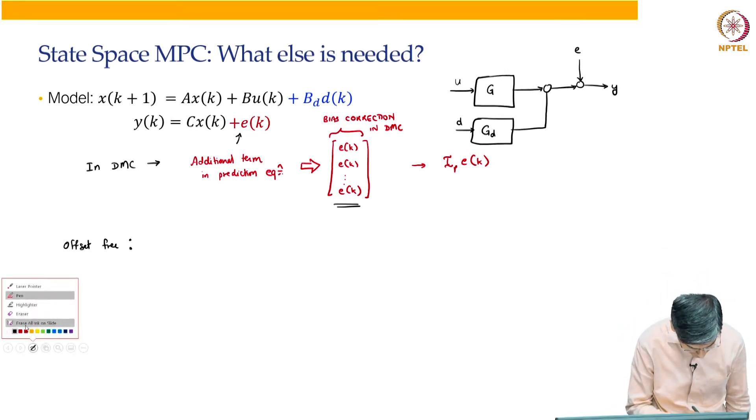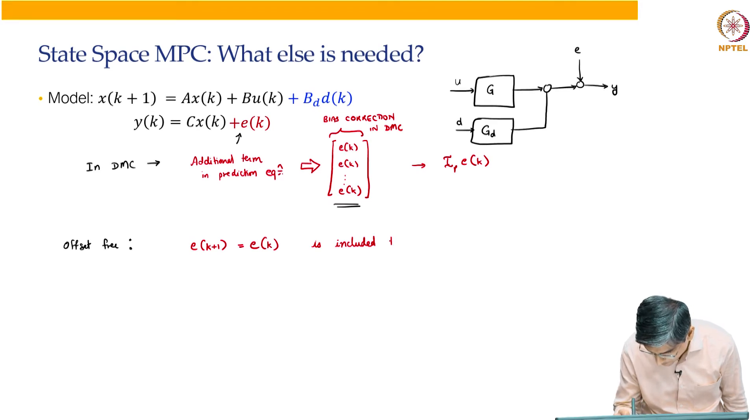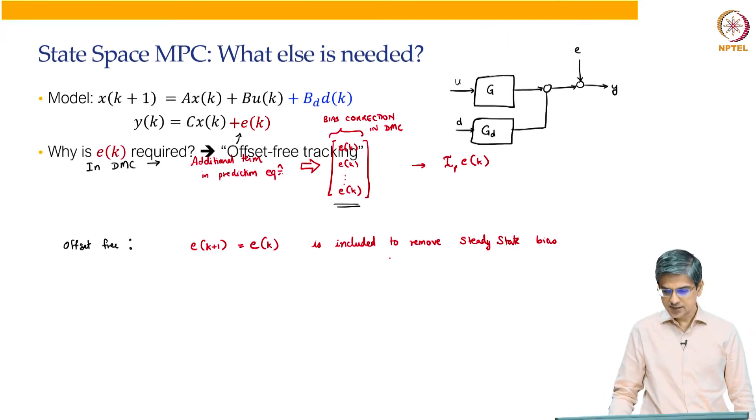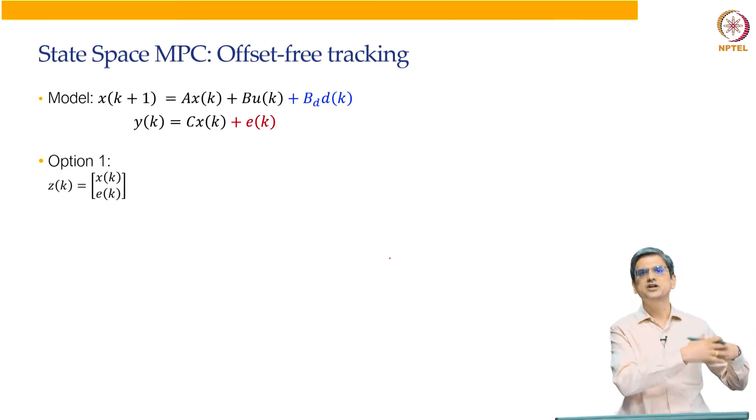We have this consistent bias that is present in the error. So, this is what we have done in DMC and for this deterministic state space MPC that is essentially what we are going to do as well. So, in order to ensure offset free tracking, and guarantee integral action.